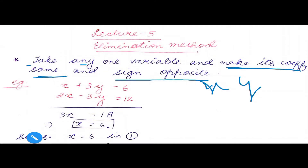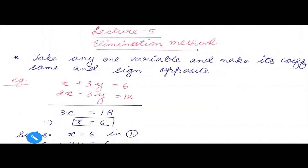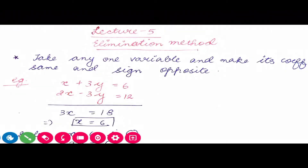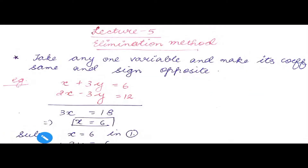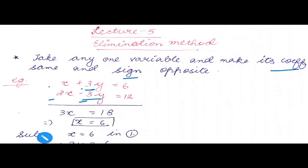Our first question is x plus 3y equals 6 and 2x plus 3y equals 12. We check x: coefficient is 1 and 2 — signs are the same, coefficients are not. Now checking y: coefficient is 3 and minus 3. Both criteria are fulfilled — coefficient is the same and the sign is opposite. So we will proceed with y.